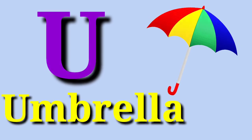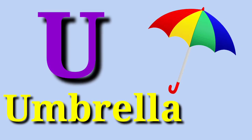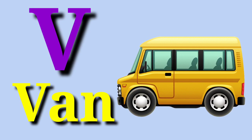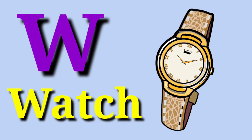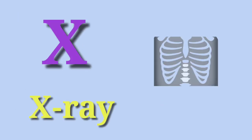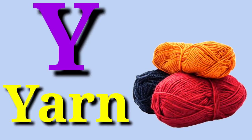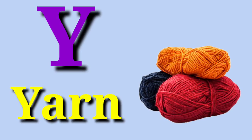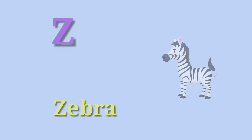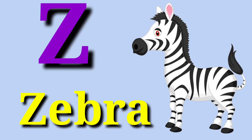U for umbrella. V for van. W for watch. X for xylophone. Y for yarn. Z for zebra.